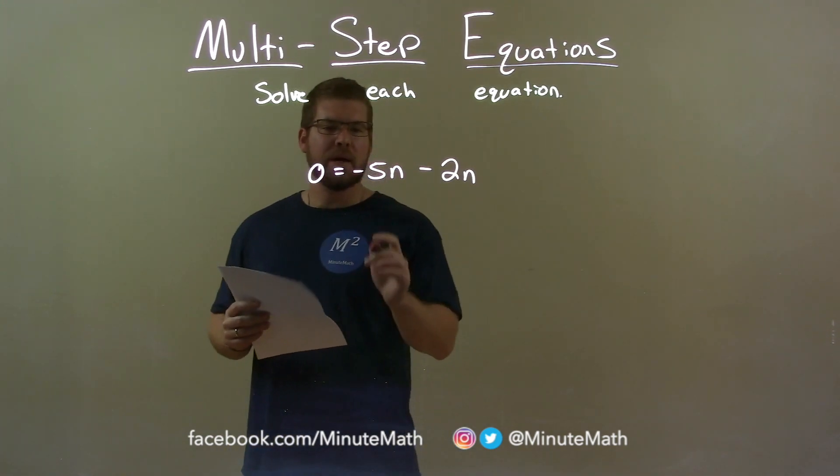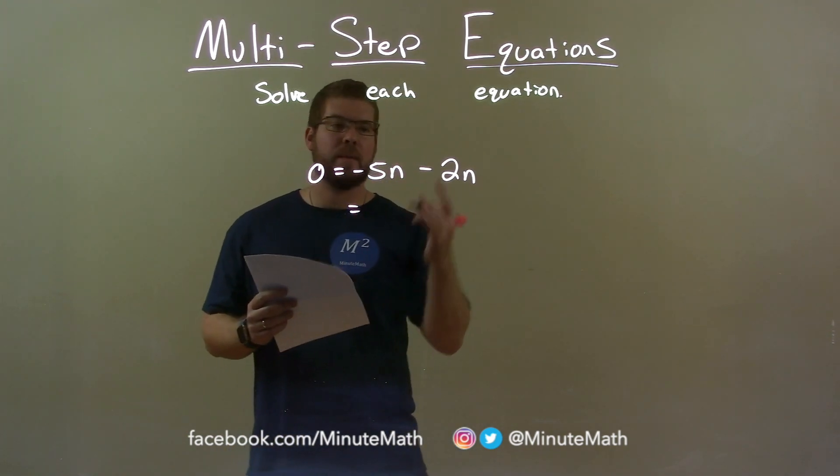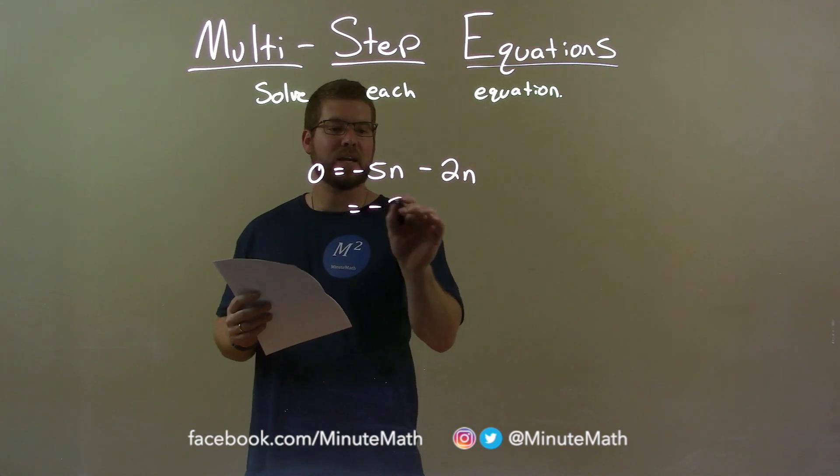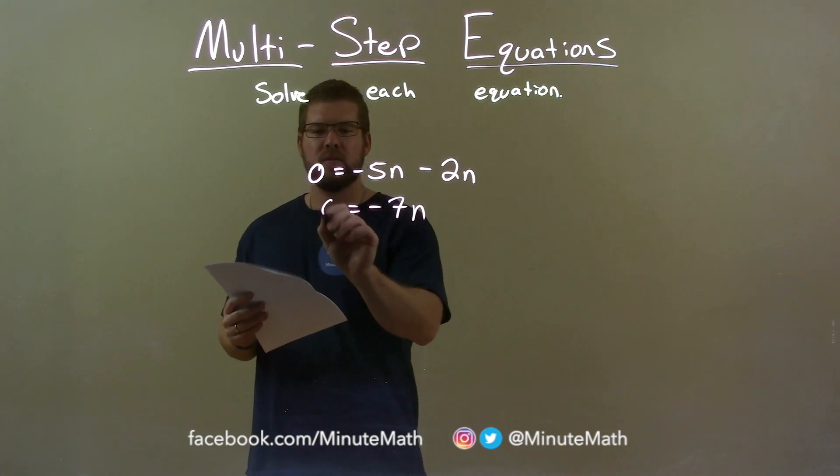I want to combine my like terms. On the right hand side, negative 5n minus 2n is negative 7n. 0 stays on the left.